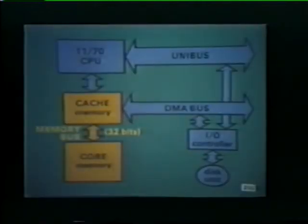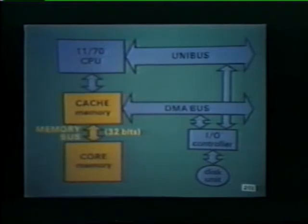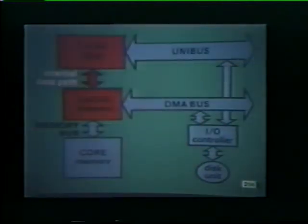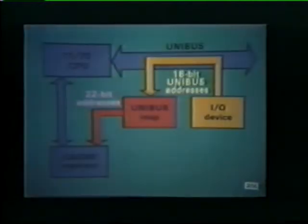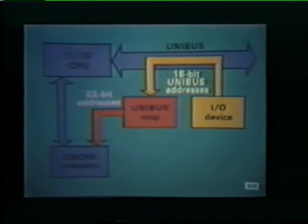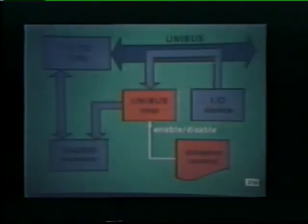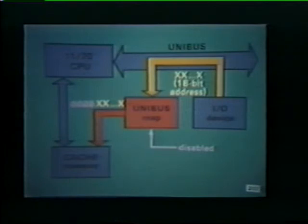The third bus in the 1170 system is the memory bus, a 32-bit wide data path connecting cache memory and core memory. This allows four bytes to be transferred in parallel between these two memory elements. Cache memory in turn connects with the CPU over an internal data path. When a device on the unibus wishes to communicate with main memory, it is necessary to convert 18-bit unibus addresses into their corresponding 22-bit memory addresses. This conversion is performed by a special hardware unit called the unibus map. The unibus map is enabled or disabled under program control. When disabled, each incoming 18-bit address has four leading zeros added for referencing main memory.